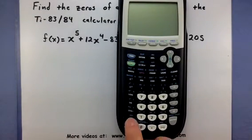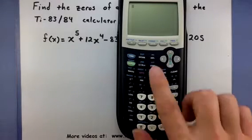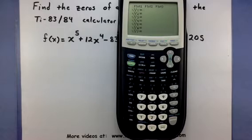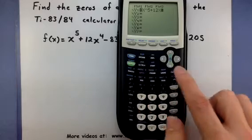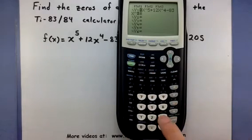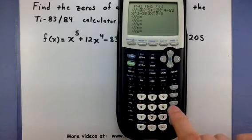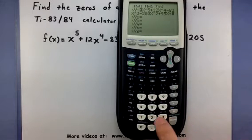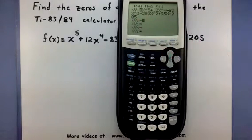To enter in any of these functions you want to go to your y equals screen. So that's this button right here. And let's just type it in. So x to the fifth plus 12x to the fourth minus 83x to the third minus 200x squared plus 95x plus 205. There we go. So this is a pretty long polynomial and you can see that on my screen, it's kind of wrapped itself around so I can actually display all of it.